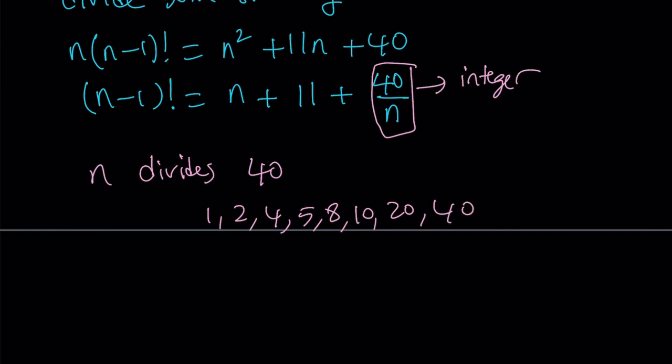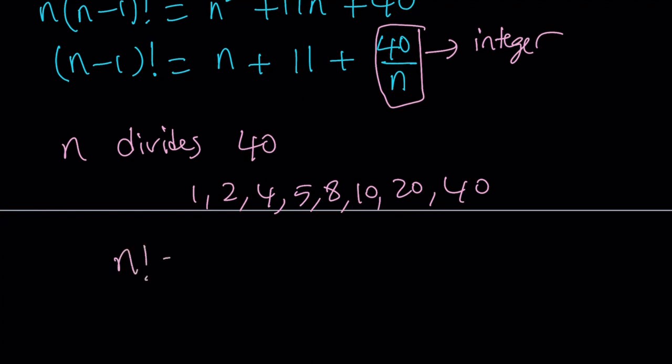Now you've got to consider the original equation, right? Our original equation was n factorial equals n squared plus 11n plus 40. Now notice that if n is 40, obviously the left-hand side is going to be super-duper large. 40 is not going to work. 20 is not going to work. So quite a few of these numbers are not going to work. But which one works? Are we going to test every single one of them?